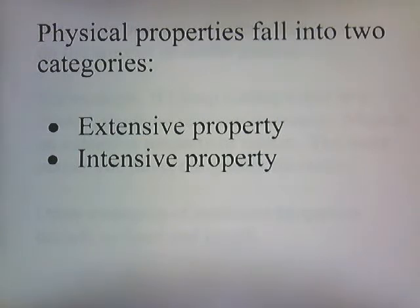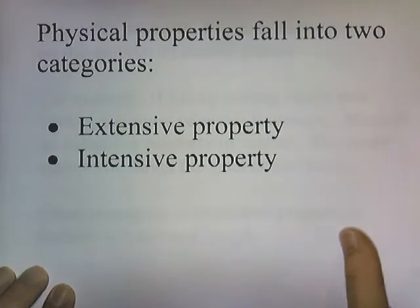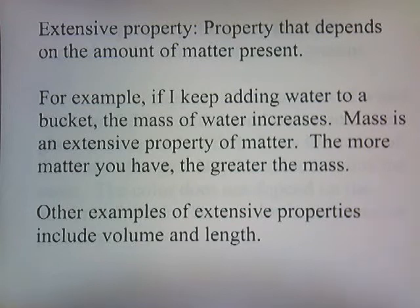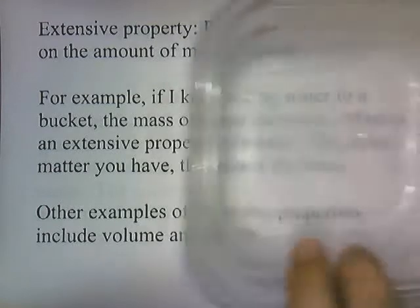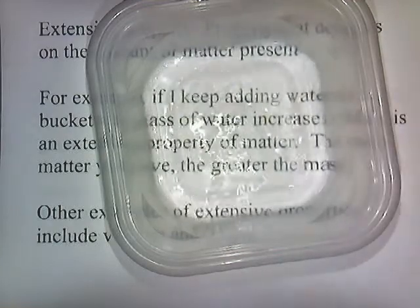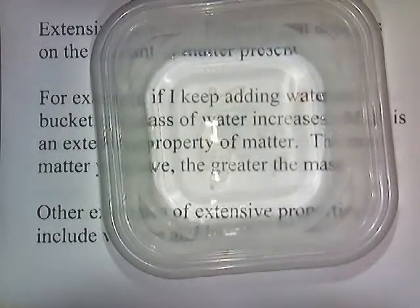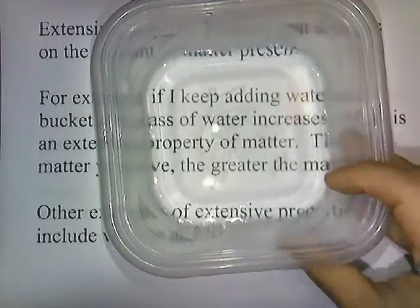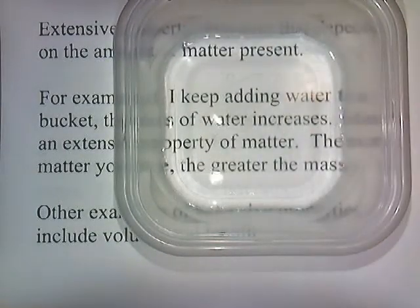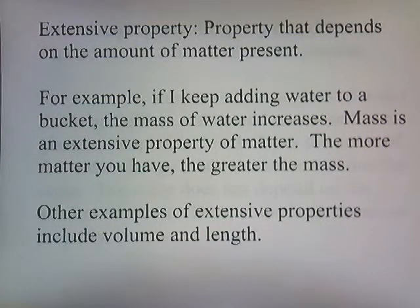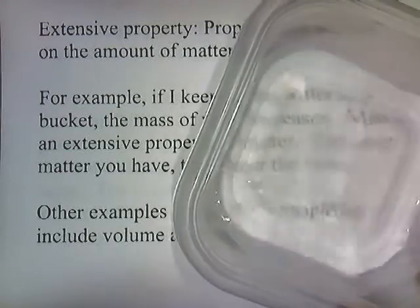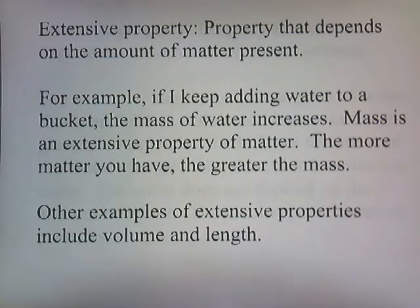Physical properties tend to fall into two categories: extensive properties and intensive properties. An extensive property is a property that depends on the amount of matter present. For example, if I keep adding water to a bucket, the mass of water increases. Mass is an extensive property of matter — the more matter you have, the greater the mass. Other examples of extensive properties include volume and length. The more matter I put in, the more space it takes up, so volume is an extensive property.